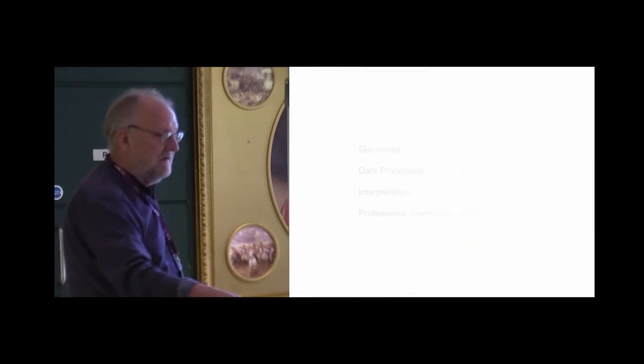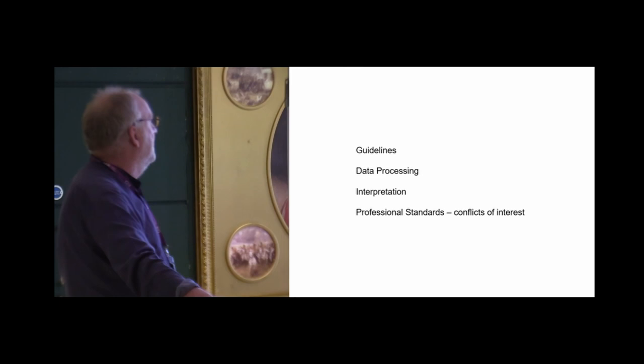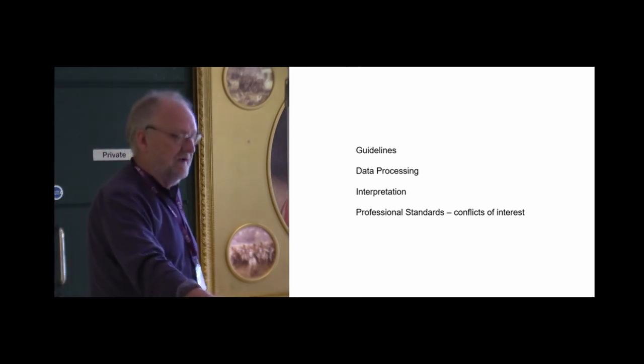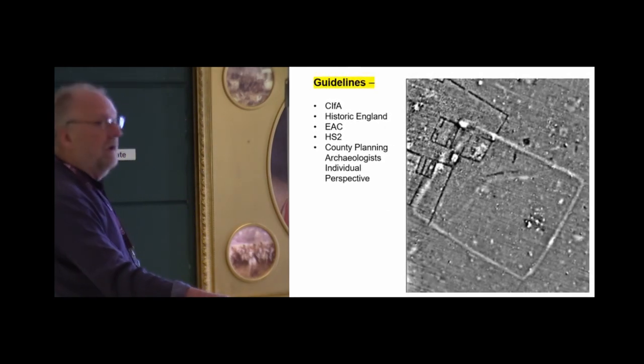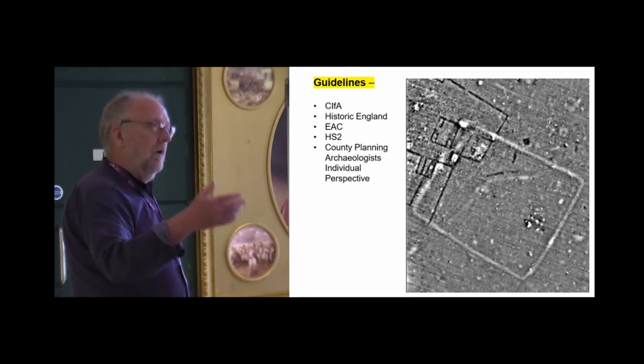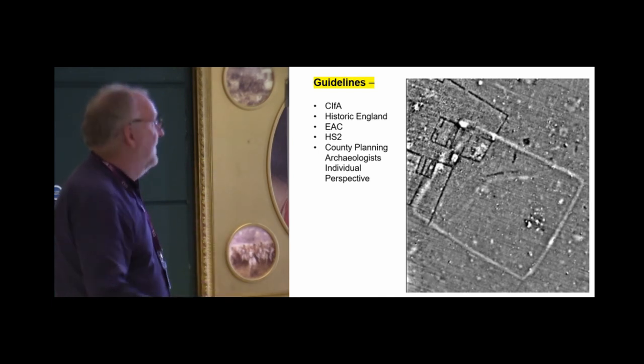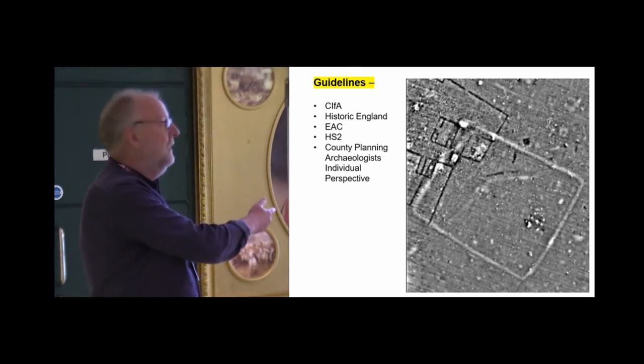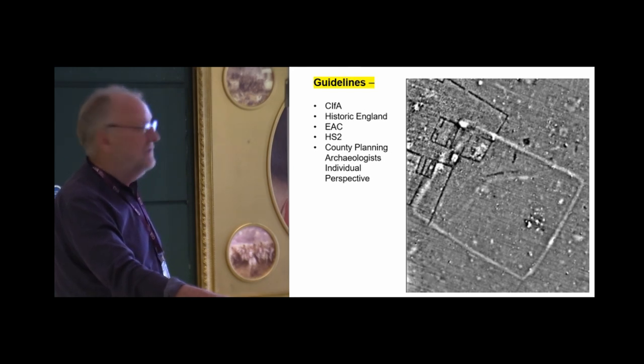I'm going to race through this. We now have guidelines. I'm going to talk briefly about data processing, interpretation, and finally, conflicts of interest. In the past 30 years, we've got all the guidelines. That's good. Going forward, though, we're talking about getting geophysicists to agree about certain things. For the past 40 years, we've not been able to agree whether we plot high values as white or high values as positive. How are we going to agree on some of these other factors, and who's going to check what we're saying?